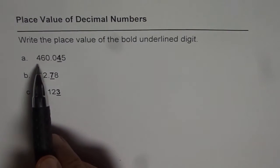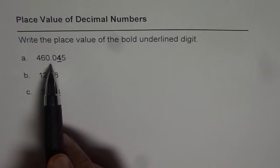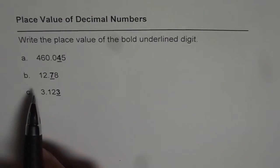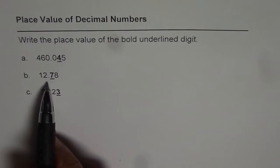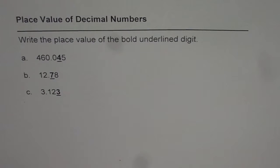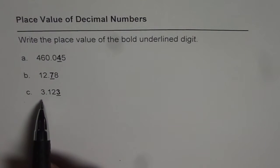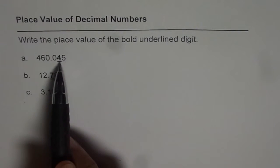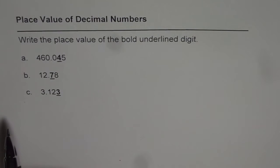First one is 460.045. Then we have 12.78. And last one is 3.123. So you need to write place value for 4 in the first case, 7 in the second case and 3 in the third case.